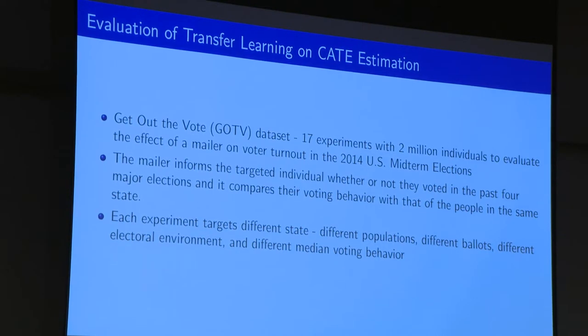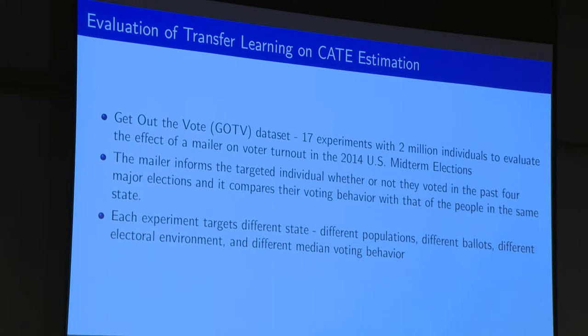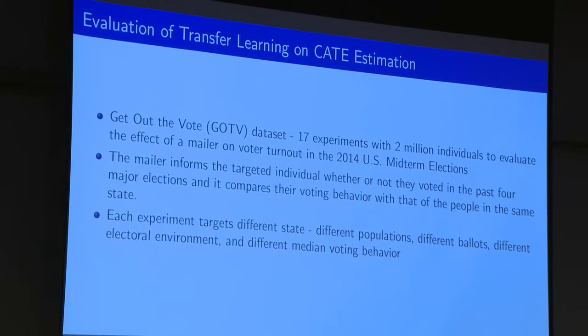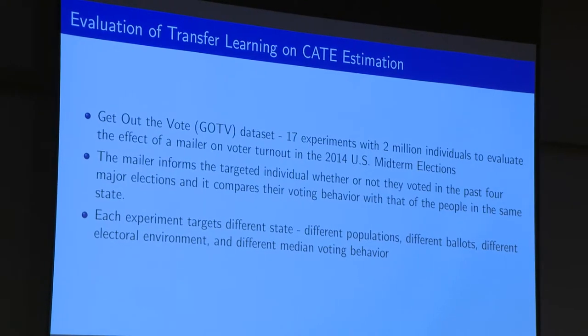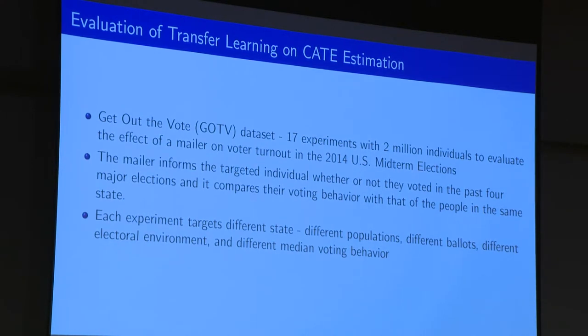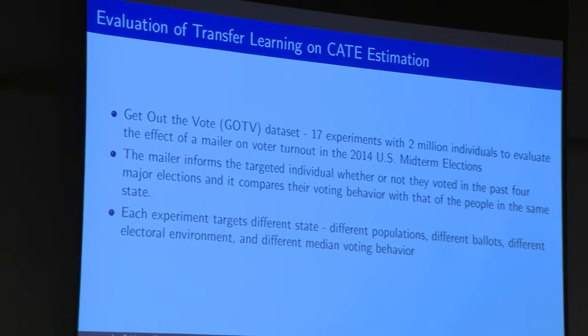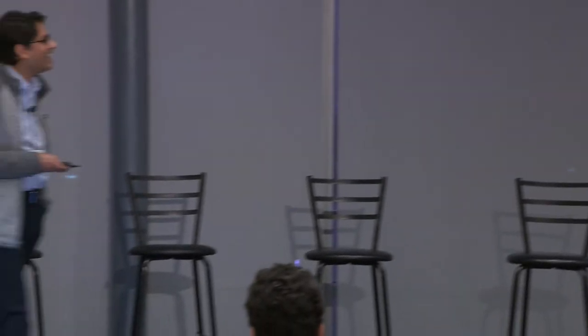In the US, whether you vote is public record but for whom you vote is not. These mailers have quite a large treatment effect — maybe four or five percent. Campaigns really care about the heterogeneity of the treatment effect, and it is heterogeneous. There's even some evidence that if you target the wrong people, there are a few who react so negatively they might even vote a little less.